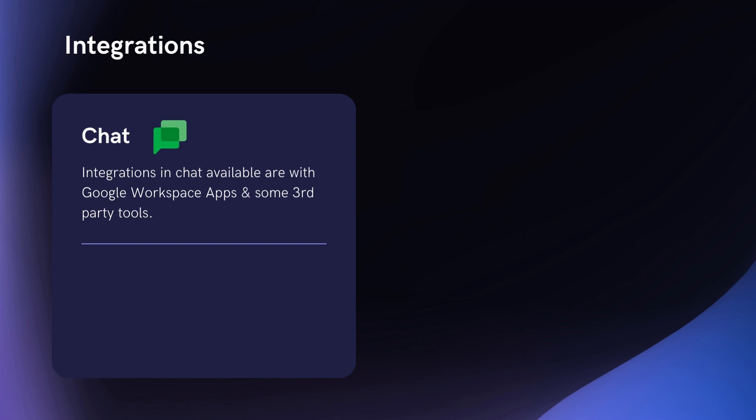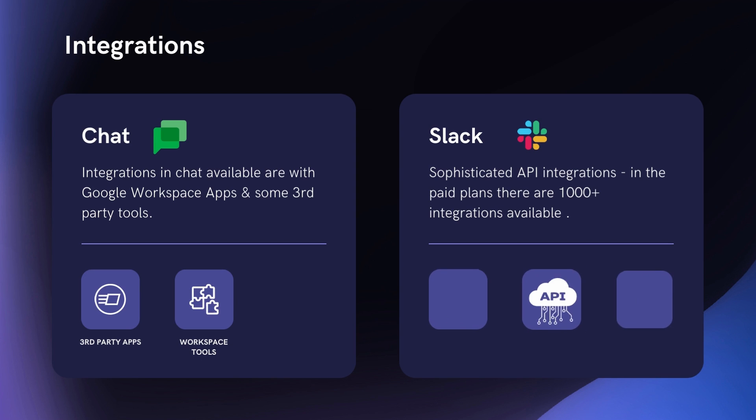Integrations: although Google Chat is relatively new, it does allow you to integrate with third-party tools, but at the moment its APIs are fairly limited. Slack definitely wins out here. On the free plan it's up to 10 integrations, and on the paid plans it's thousands. Slack's APIs have been around longer — it's a much more mature integration platform. Google Chat integrations are growing quite a bit year on year, but there are definitely fewer right now.